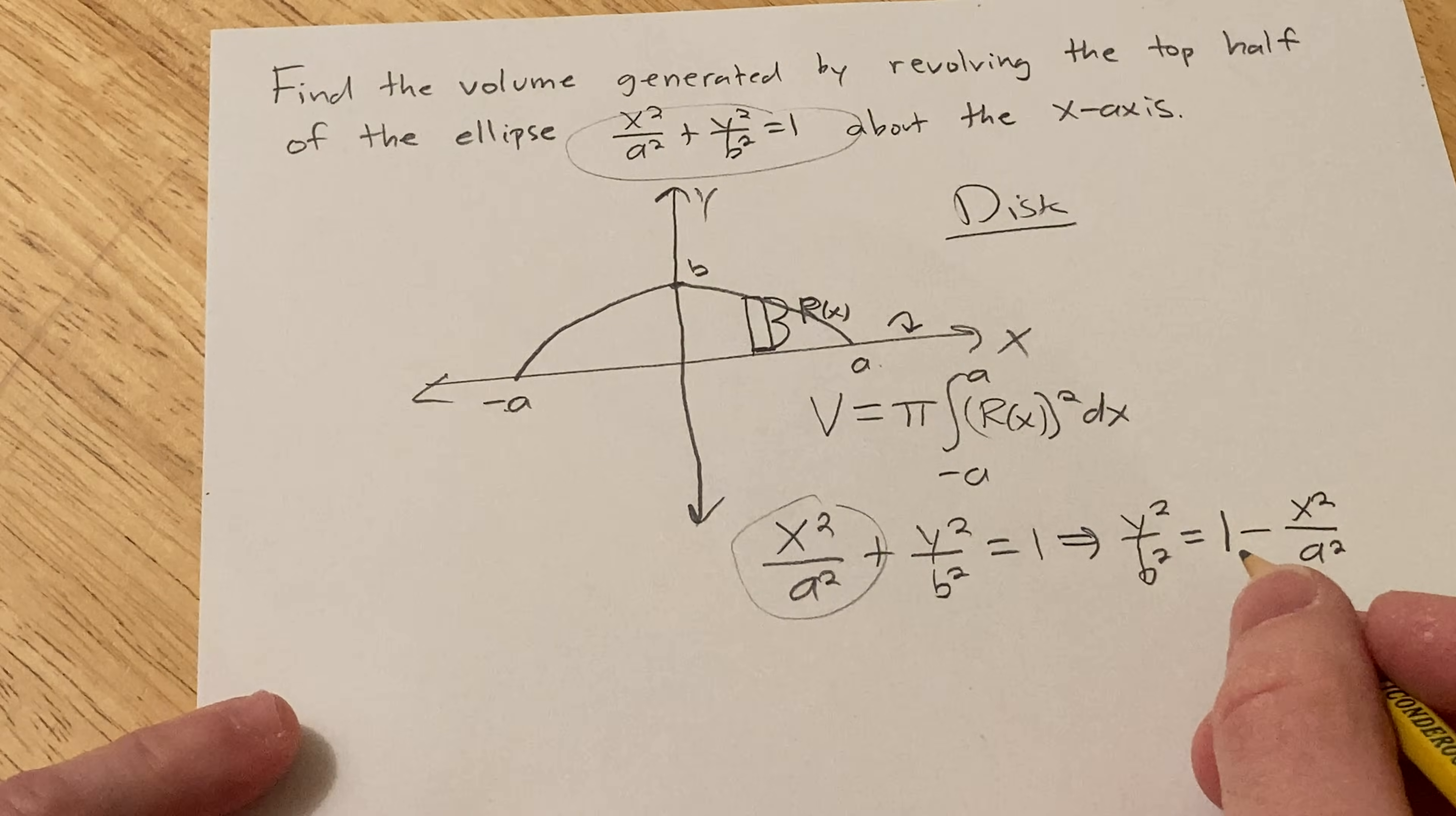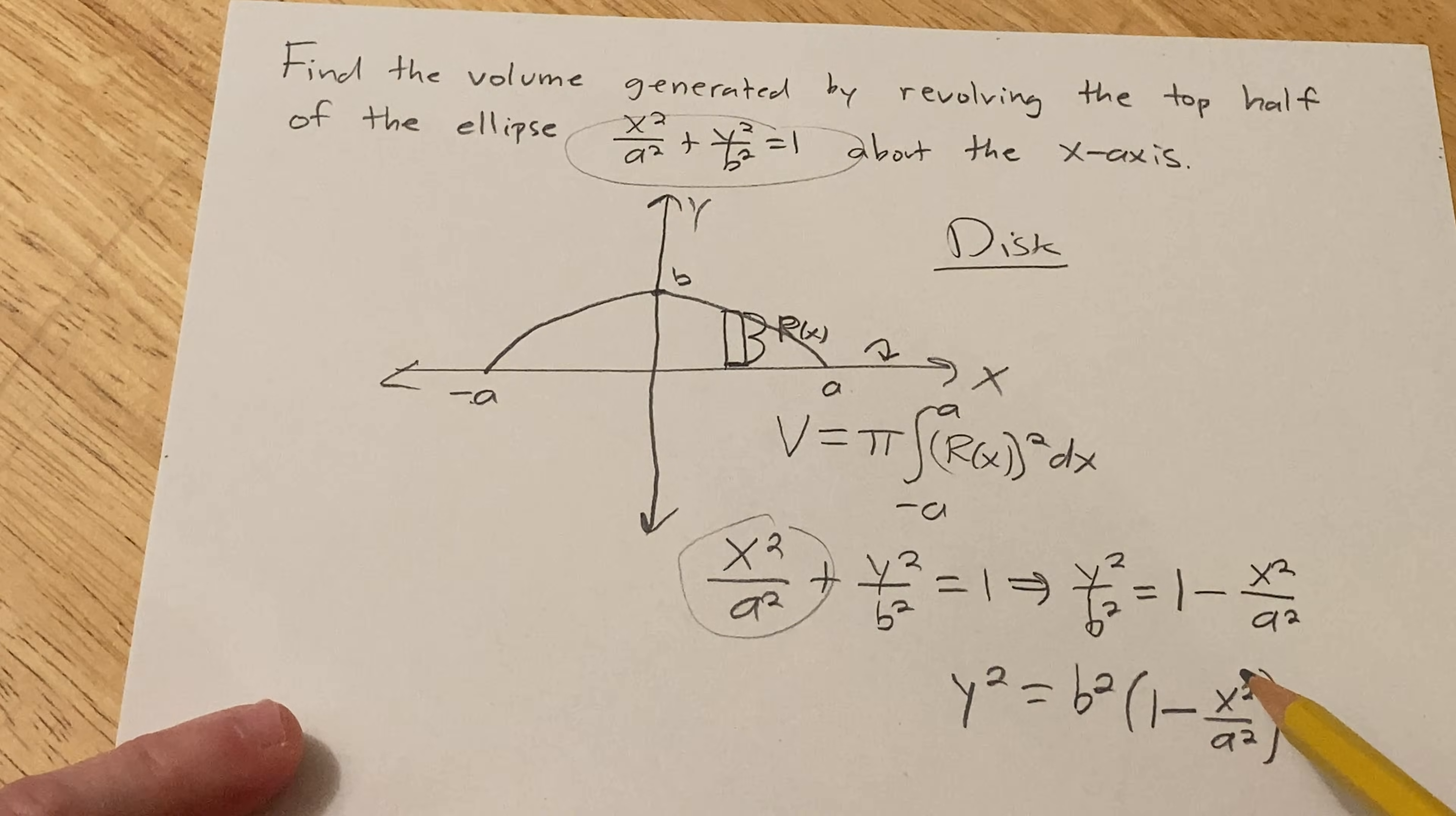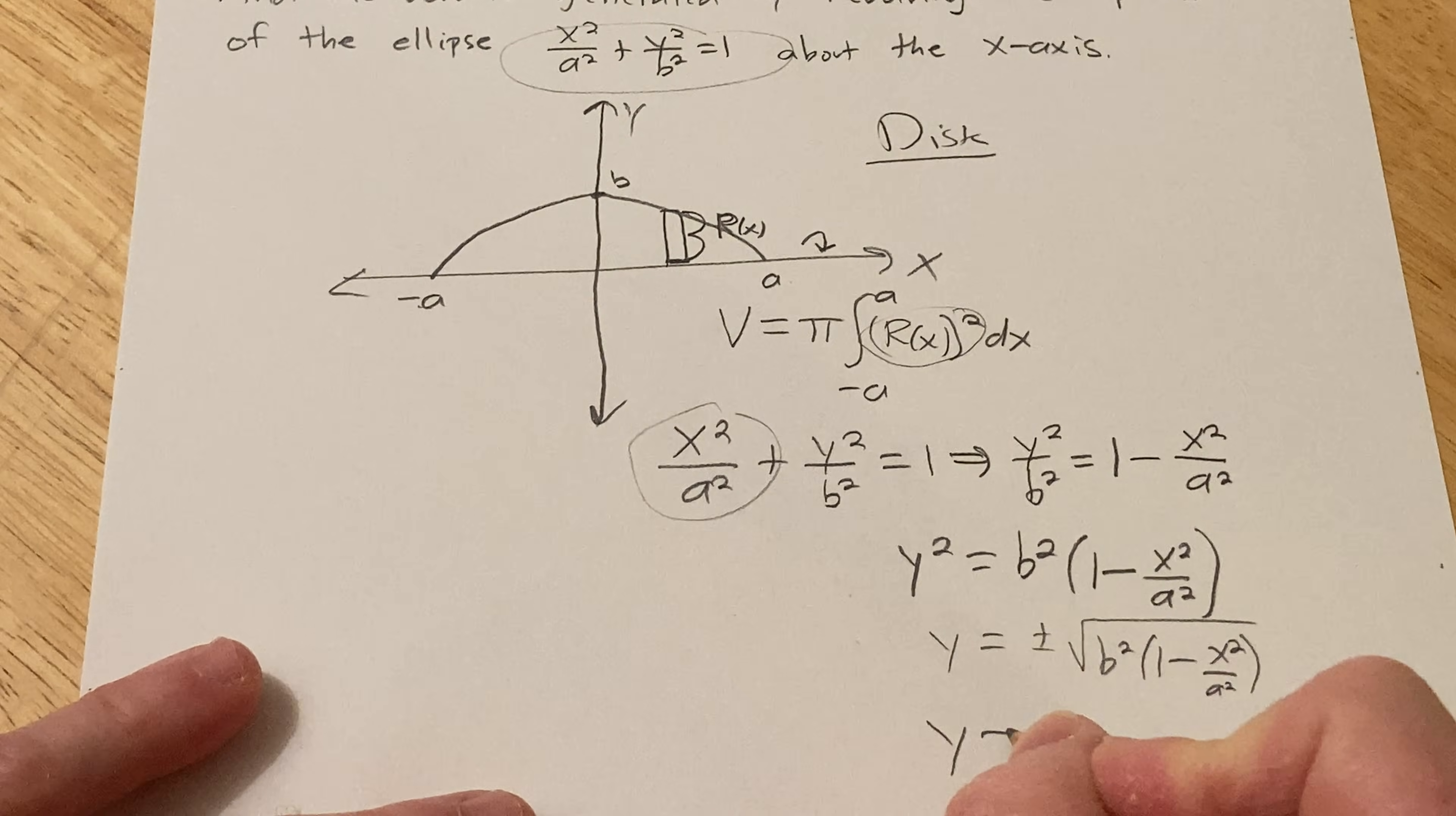And if we multiply both sides by b squared, we end up with y squared equals b squared, parentheses, one minus x squared over a squared, just like that. All right, so y, if you solve for y, you're going to end up taking the square root, right? But the thing is, we have R of x squared. So if I were to solve for y, I would get plus or minus the square root of b squared, one minus x squared over a squared. And I would want the plus, right? I would want the plus because it's the top half of the ellipse. The minus would be the bottom half.